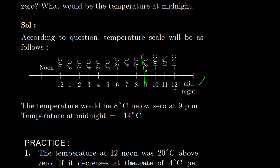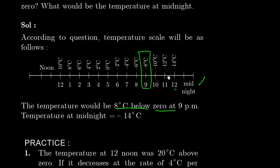यहां तो आया माइनस 8 degree. तो देखो, the temperature would be 8 degree centigrade below 0 at 9 o'clock. 0 से भी नीचे चला गया — यानिकि माइनस में बन गया. And the temperature at midnight is माइनस 14 degree centigrade.